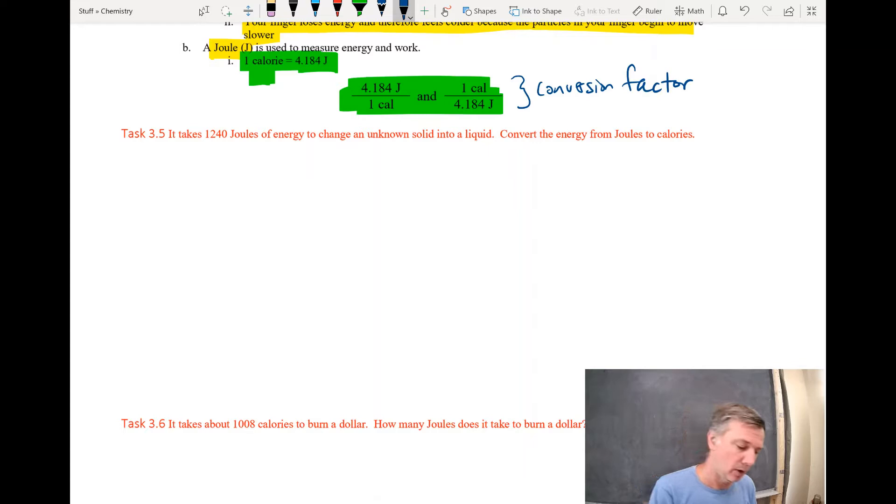So we're going to do a conversion. Conversions require T-charts. So we have 1,240 joules. That's what we have. We're trying to find calories. So I'll make a T-chart. Whatever unit I have on top, I'm trying to convert joules to calories. So I'm going to get rid of joules by dividing by it. Joules divided by joules is equal to 1. So I get rid of the unit joules. I can cross these out.